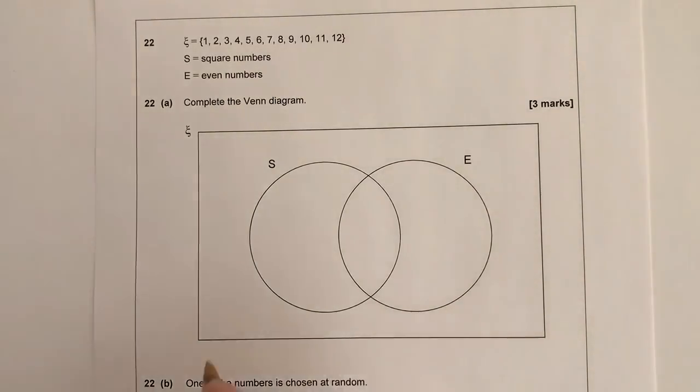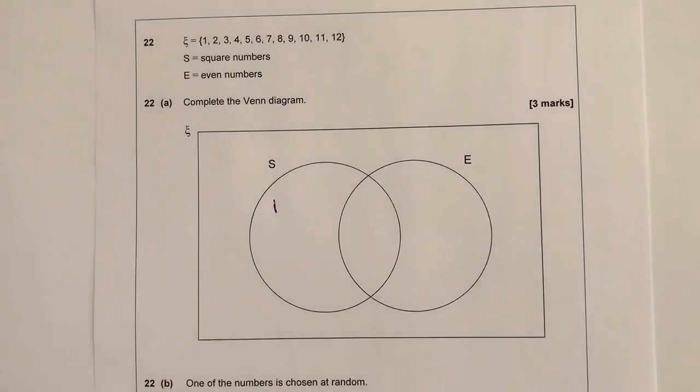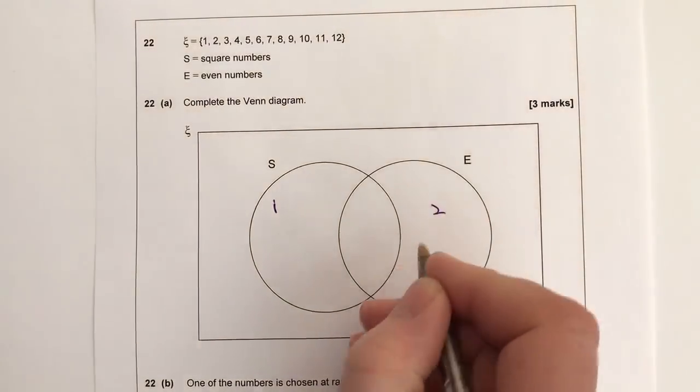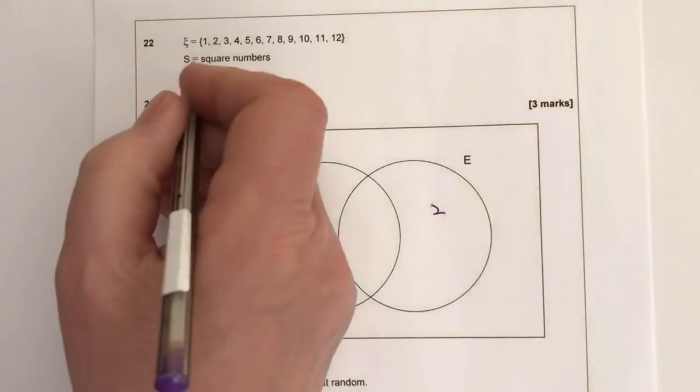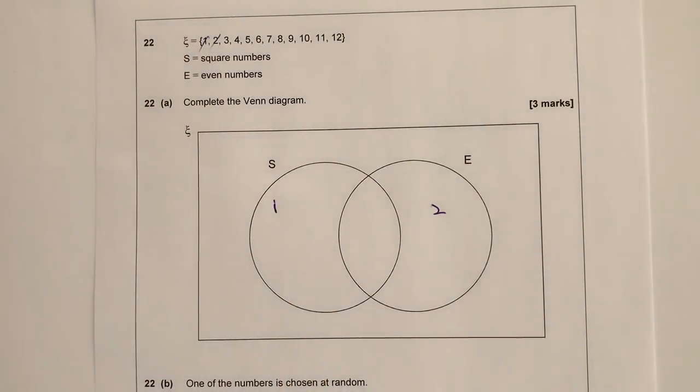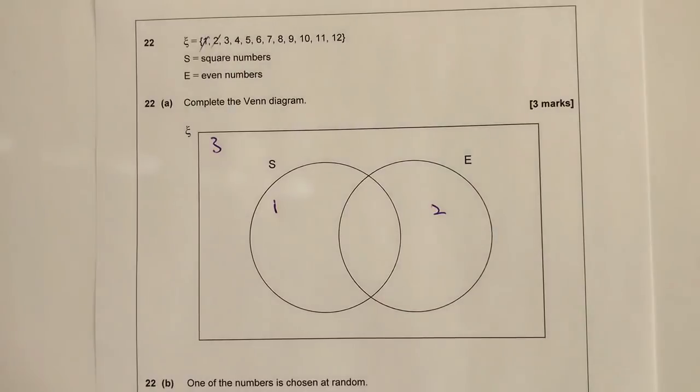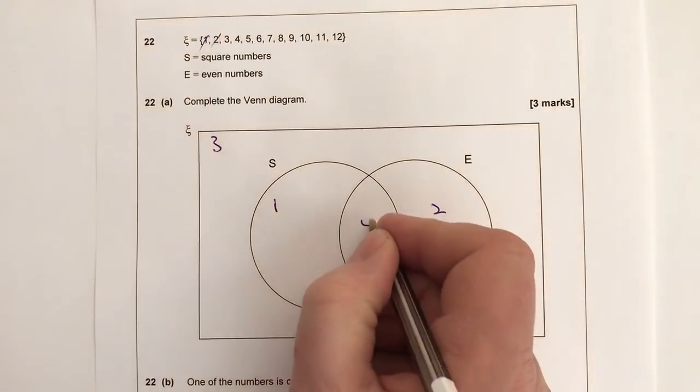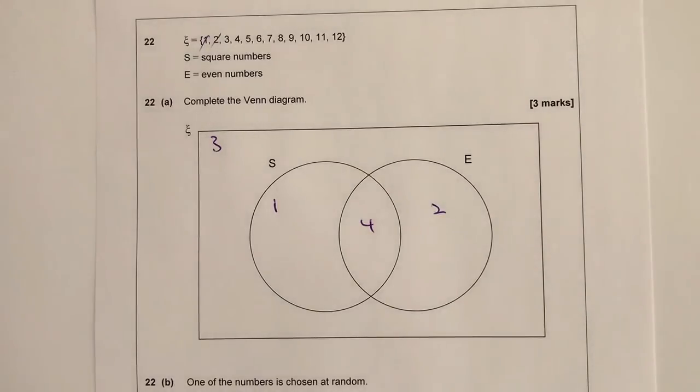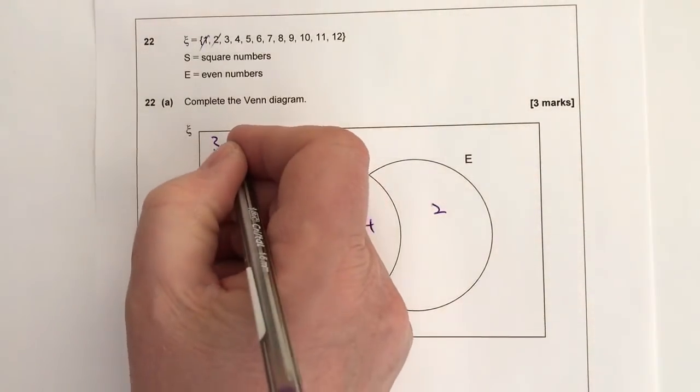It says that all we need to do is complete it where we've got square numbers in here and even numbers in here. So the easiest way is just to work through the list. So if I've got 1, well 1 is actually a square number but it's not an even number. 2 is an even number but it's not square. Let's look at 3. Well 3 is neither square nor even so it's going to go out. 4 is actually a square number and it's an even number, so it's going to go in the middle there.